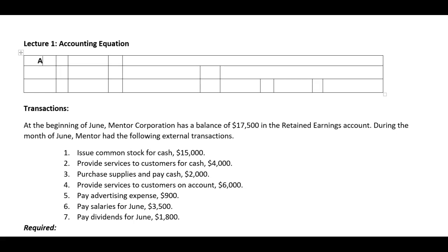In our equation, we start with assets. Assets are items that a company has control of that bring them benefit. A lot of people say things that we own, but we don't necessarily have to own the asset. For example, if you buy a car and finance 100% of it, you technically do not own that car until you pay it off. However, you have control of it as long as you're making payments, and it brings you benefits. So I like to say assets are resources that we control or possess that bring us future benefit. Examples would be buildings, cars, and of course cash is very important.